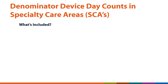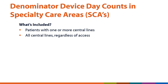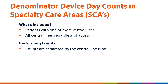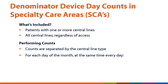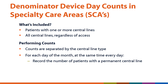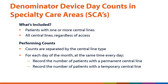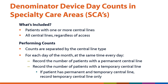Let's move on to specialty care areas or SCAs. The denominator device day count includes all patients with one or more central lines at the time of the count, regardless of access. When performing denominator device day counts in SCAs, the counts are separated by the type of central line. For each day of the month at the same time every day, record the number of patients with at least one permanent central line, and additionally record the number with at least one temporary central line. However, if a patient has both a permanent and temporary central line, record the temporary central line only.